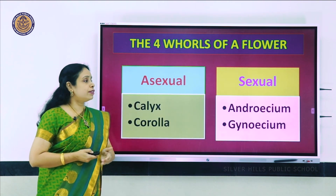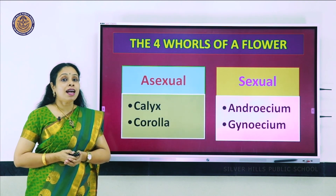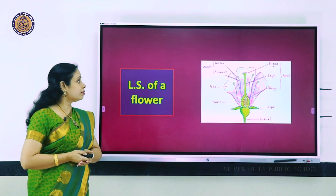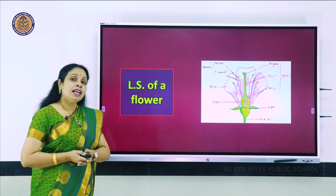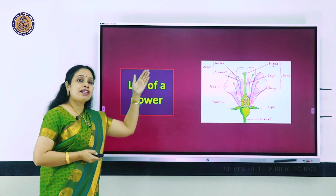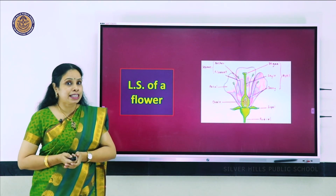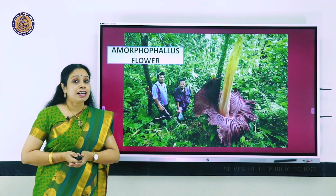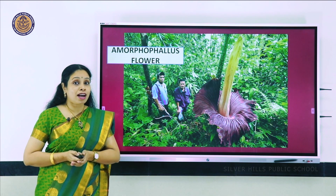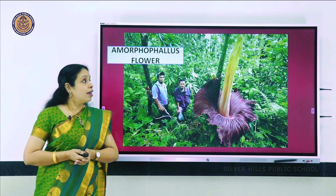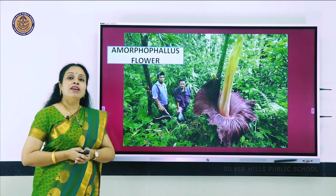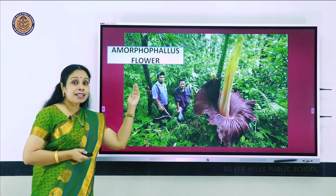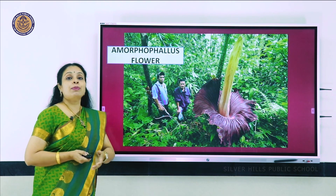The sexual whorls are androecium, the male part, and gynoecium, the female part. Here you see the longitudinal section of a flower where all four parts are visible. You know that Rafflesia is the biggest flower in the world. Here you see the tallest flower, which is that of Amorphophallus - compare its size with that of human beings.